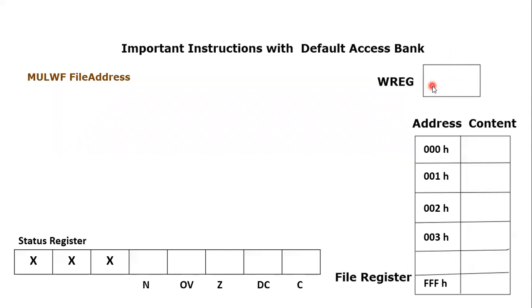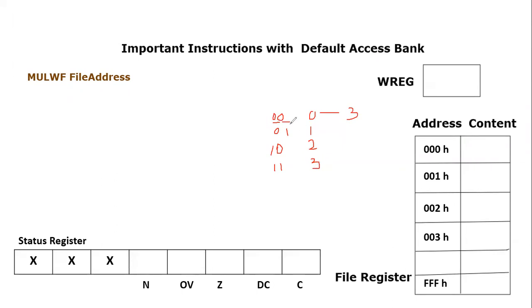Before we see how this instruction works, we need to understand an important fact. Let's say we want to multiply a two-bit number with another two-bit number. A two-bit number can range from zero to three: 00 = 0, 01 = 1, 10 = 2, and 11 = 3. So the maximum number representable by a two-bit number is three.